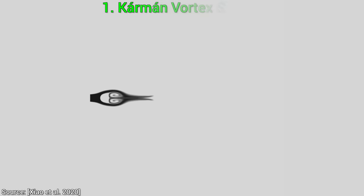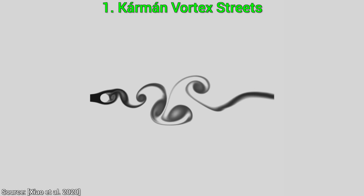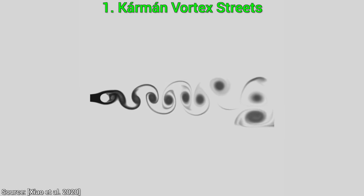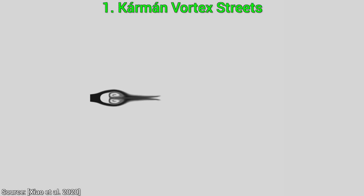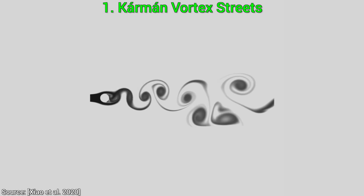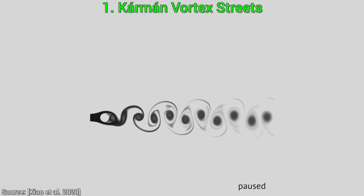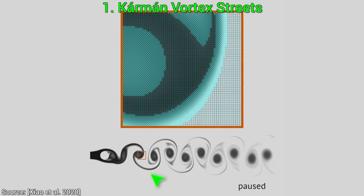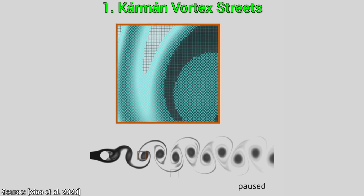Experiment number one: Kármán vortex streets. We noted that the tilted grid points only appear where they are needed, and these are places where there is a great deal of vorticity. Let's test that. This phenomenon showcases repeated vortex patterns, and the algorithm is hard at work here. So let's look under the hood together and see what is going on. Look at that! The algorithm knows where the vorticity is, and as a result, these tilted cells are flowing through the simulation beautifully.